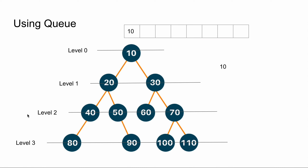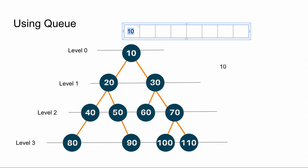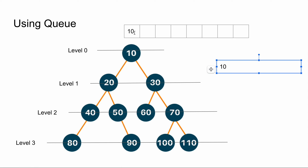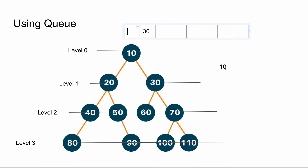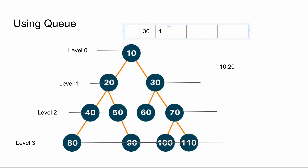So how do you do this? We use a queue data structure. We add the root — that is 10 — to the queue, and we write a while loop and check: while the queue is not empty, what do we do? We remove this element, print it, and add its left child and its right child. The left child is 20 and the right child is 30.